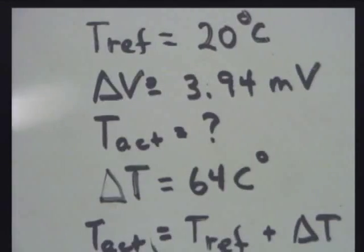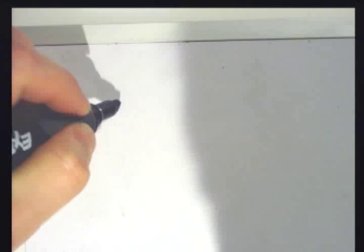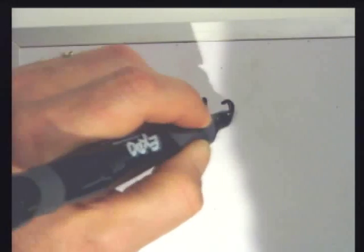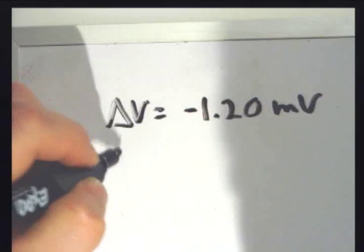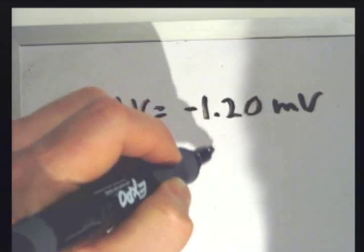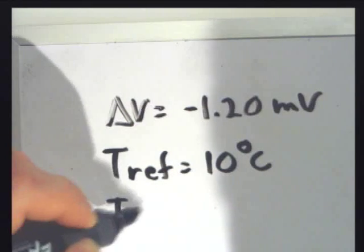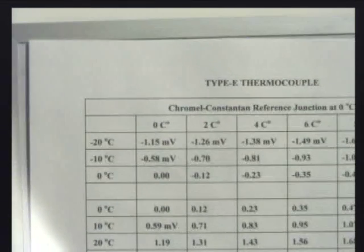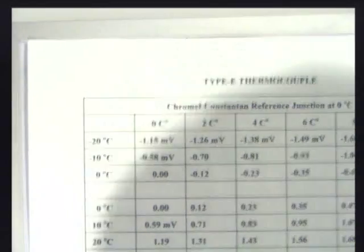Let me do one more. Let's say we've got a voltage difference of minus 1.20 millivolts. And my reference temperature is equal to 10 degrees Celsius. And I want to know what the actual temperature is. Well, if I go to my sheet, I look for minus 1.2, and the negatives are up here.